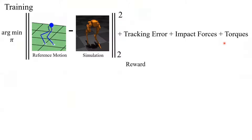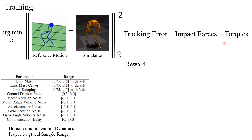In each episode, we also randomly change the command every eight seconds, encouraging the agent to learn how to transition from one gait to another. To improve robustness and bridge the sim-to-real gap, the dynamics of the environment are randomized during training. Using dynamics randomization, we address three major sources of uncertainty in the environment. The first is modeling error.